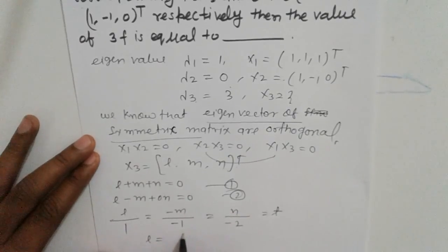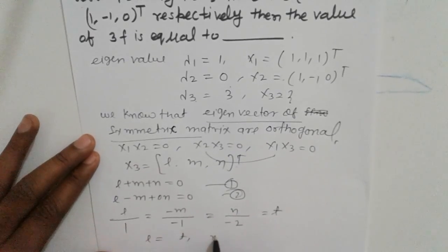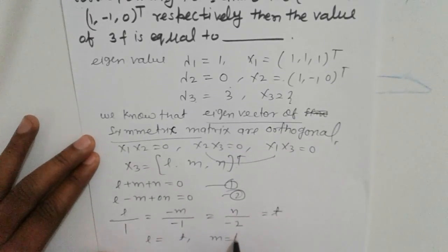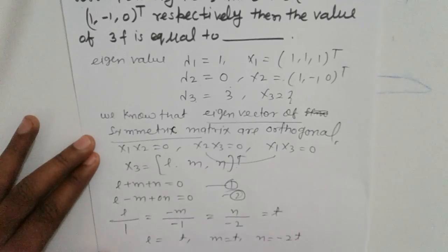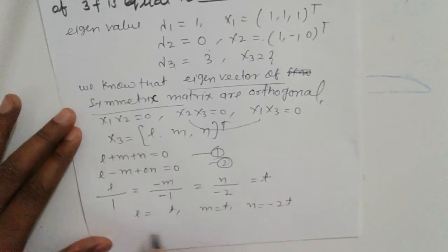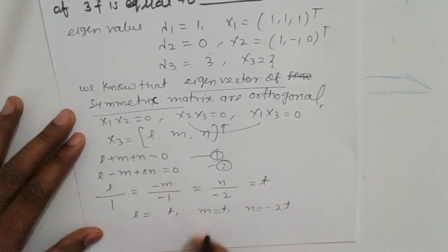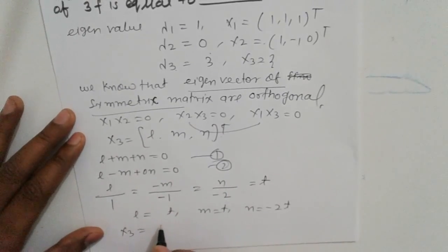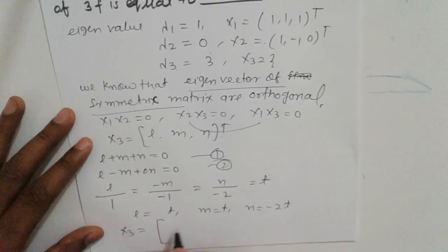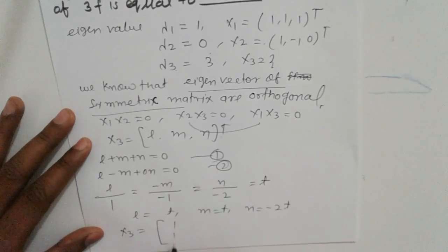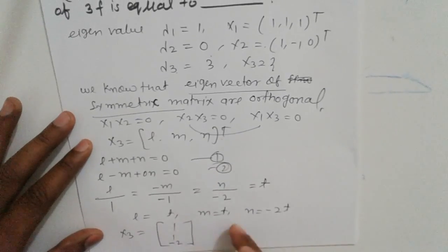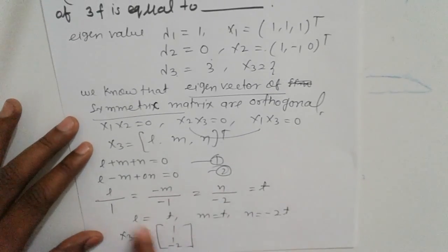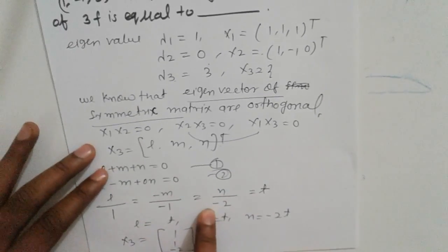So l = t, m = t, n = -2t. Therefore x3 = [1, 1, -2].